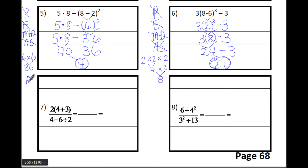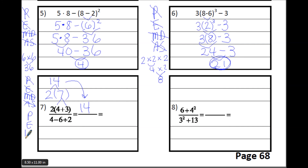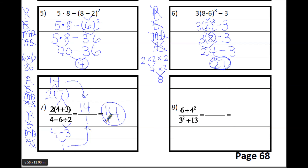For number 7 we have a numerator problem and a denominator problem. Write PEMDAS for the numerator. Do the parentheses first: 4 plus 3 is 7 — don't forget the parentheses because they mean multiplication. No exponents, but we have multiplication: 2 times 7 is 14. The answer to the numerator expression is 14. For the denominator, rewrite PEMDAS. No parentheses or exponents. There is division: 6 divided by 2 is 3, rewrite the rest. Then subtraction to get 1 — so 14 over 1 equals 14.